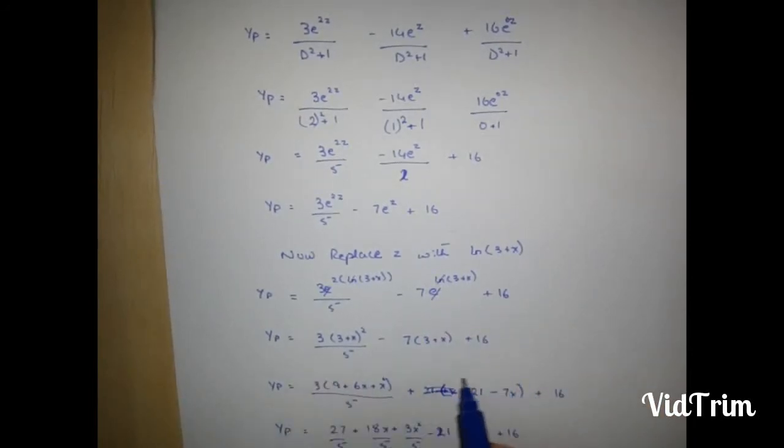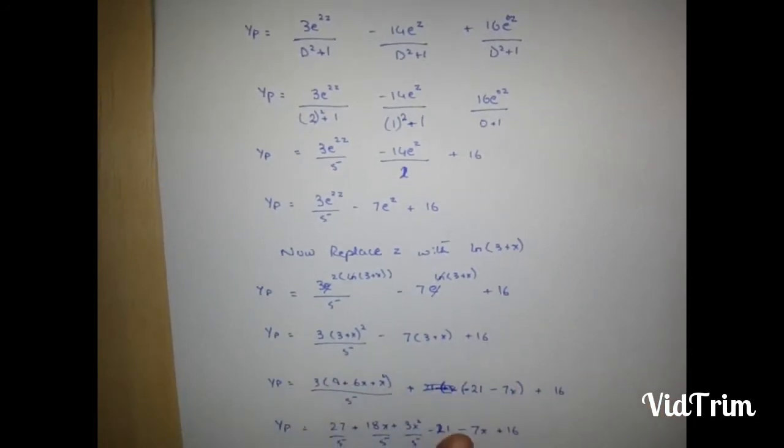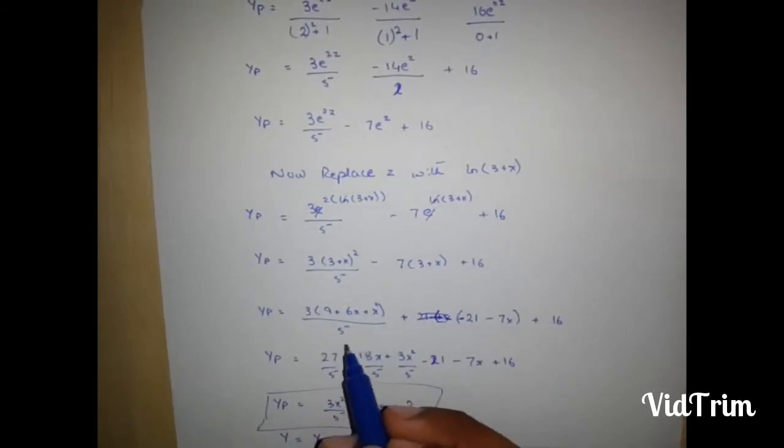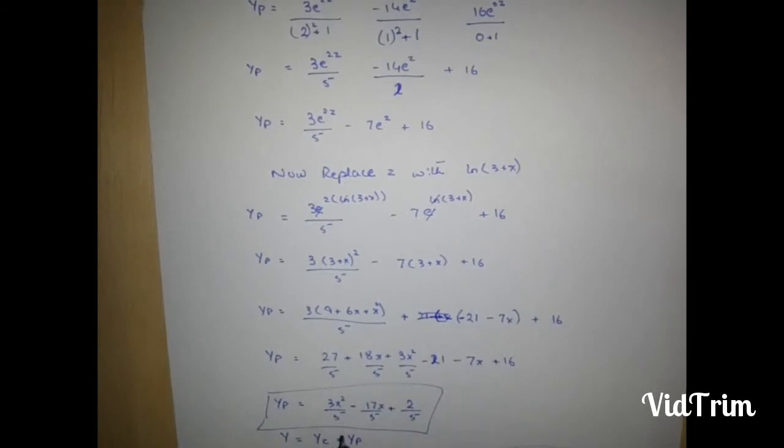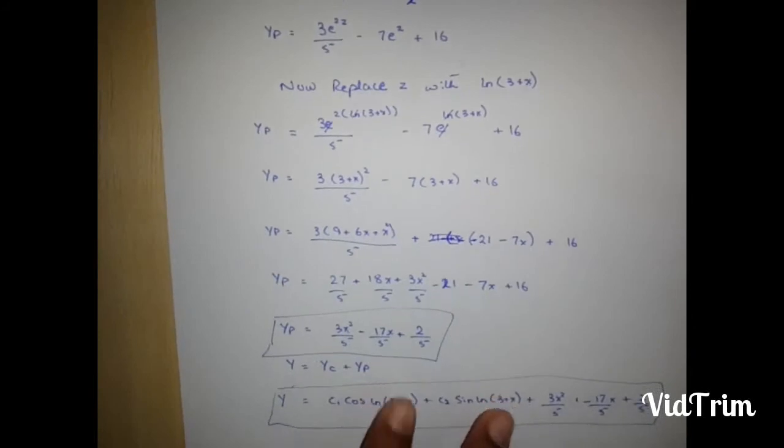Our yp is equal to this. Simplify it like this. I simplified it. After simplification, it will become 3x square upon 5 minus 17x upon 5 plus 2 upon 5.